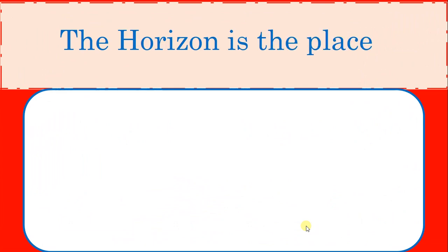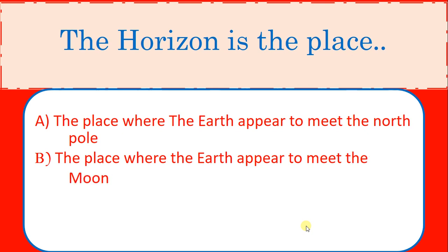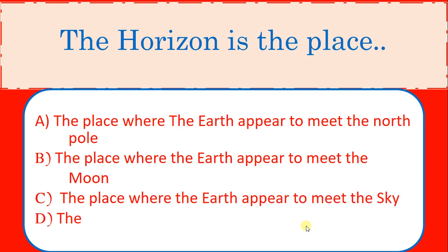The horizon is the place. Options: A) The place where the earth appear to meet the north pole. B) The place where the earth appear to meet the moon. C) The place where the earth appear to meet the sky. D) The place where the earth appear to meet the hills. Correct answer: The place where the earth appear to meet the sky, option C.